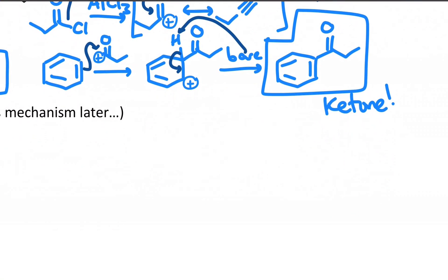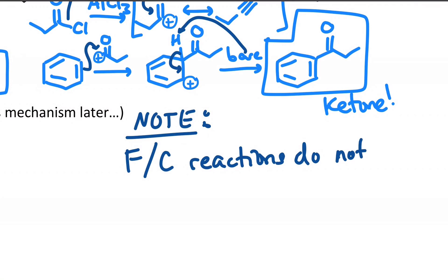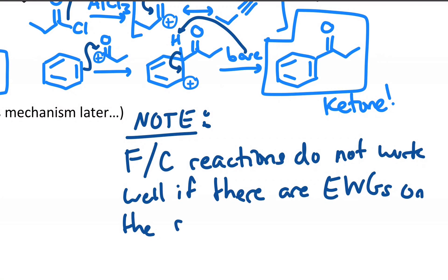So that's much more useful if you want to make something with a long linear carbon chain attached to the ring. I'll also just add another note about Friedel-Crafts in general. Friedel-Crafts reactions do not work well if there are electron-withdrawing groups or EWGs on the ring, or OH and NH2 groups.